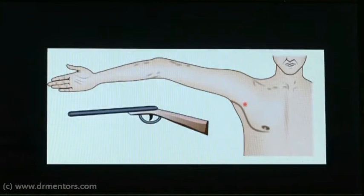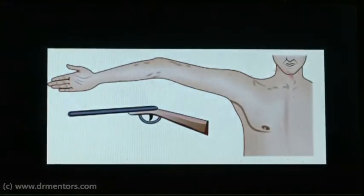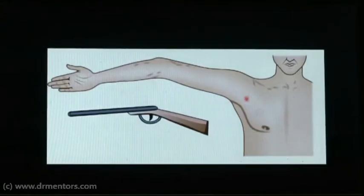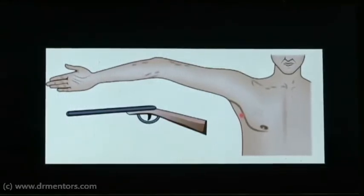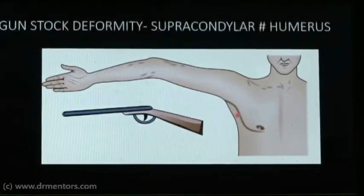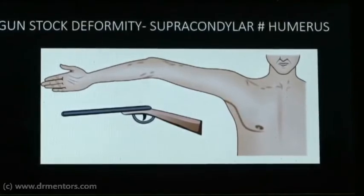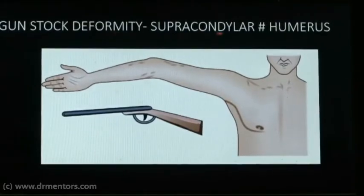Another very frequently asked image shows the gun-stock deformity — like the shape of a gun, there is this characteristic deformity. This is also a complication of supracondylar fracture humerus, so gun-stock deformity is seen in supracondylar fracture humerus.